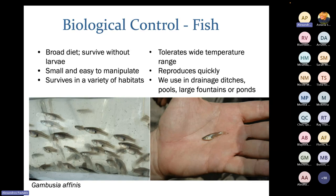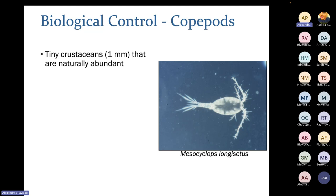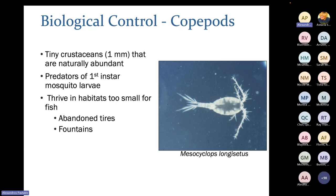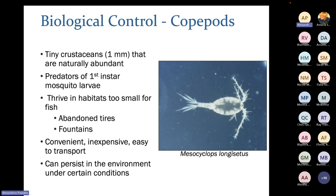Copepods are tiny crustaceans naturally abundant in many environments and are really great for mosquito larval control. They predate on first instar mosquito larvae — within 24 hours after egg hatching — when larvae are very small. They thrive in habitats too small for fish, like abandoned tires or smaller fountains. Copepods are convenient, inexpensive, and easy to transport. They reproduce readily, making it easy to maintain a colony, and they can persist in the environment over time just like fish, providing sustained control.